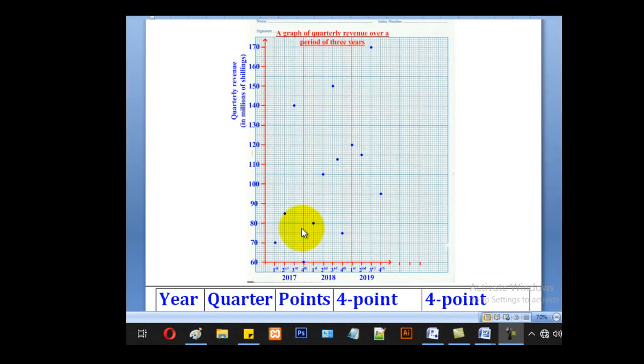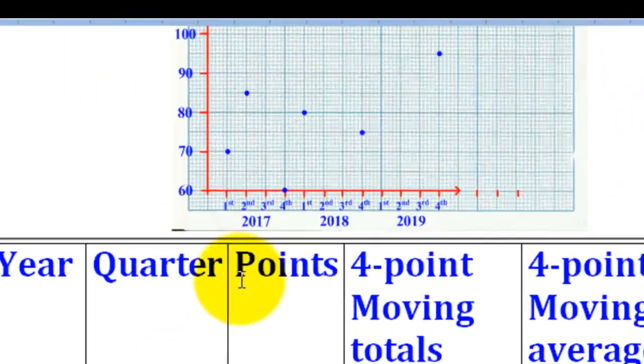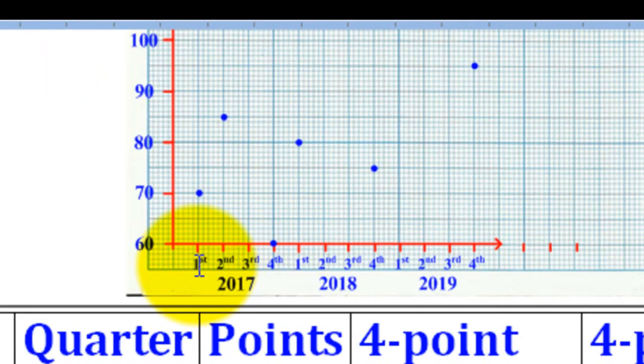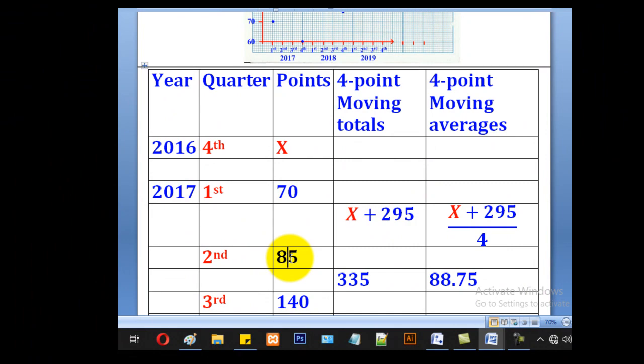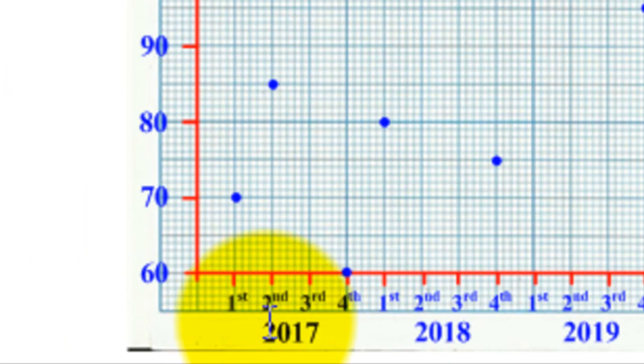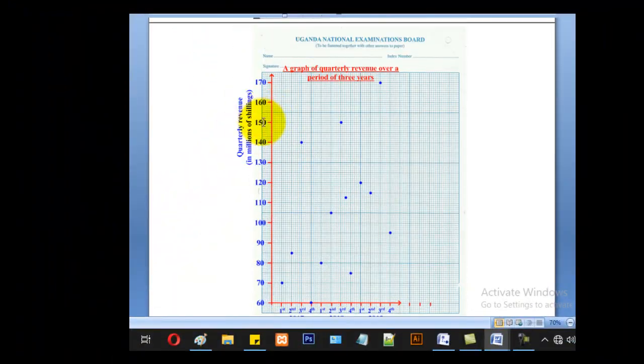Next step is to plot. We shall begin with the original data. This one we can't plot it. We shall start with this. 70 corresponds to first. Go to your first of 2017, look for 70 and plot that value. Next is 85. Go to your second for 2017, look for 85 and plot it.